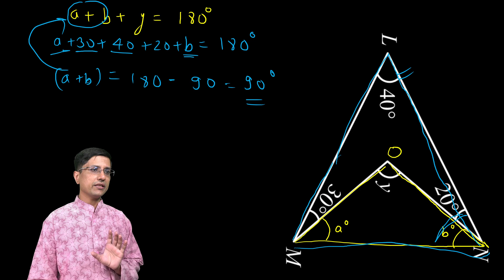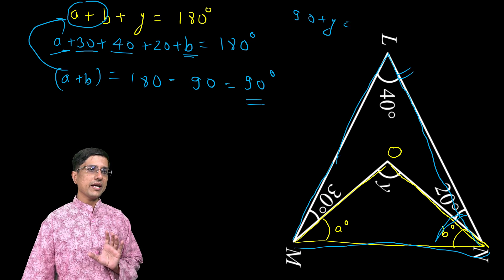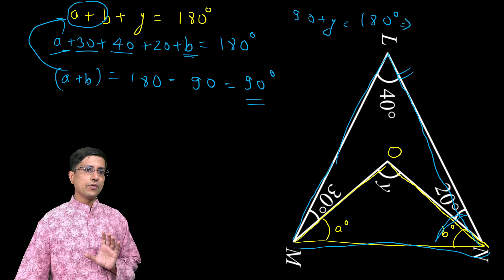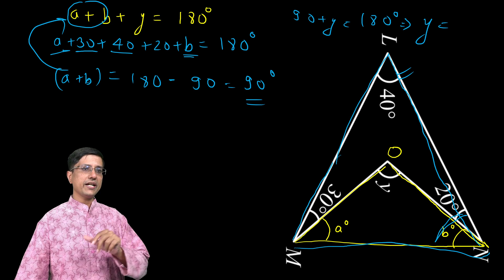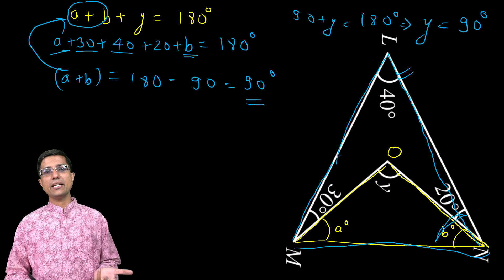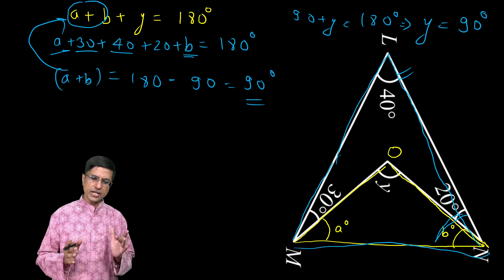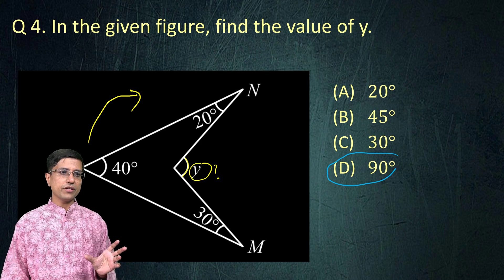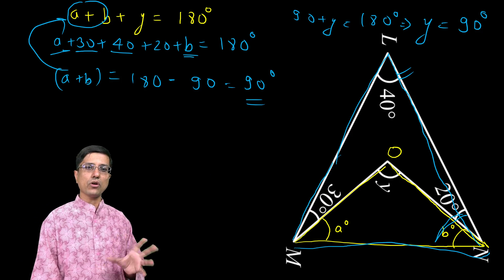This we know is 90 + y = 180 degrees. And therefore, y comes out to be 180 - 90, which is equal to 90 degrees. So that is your answer. Again, a very simple problem, no hassle, no fuss. You can just systematically solve it.